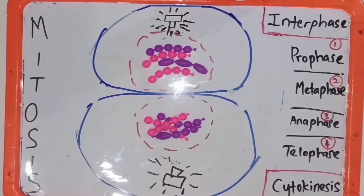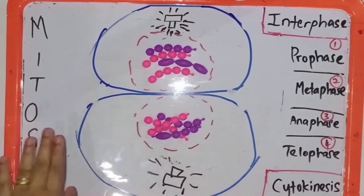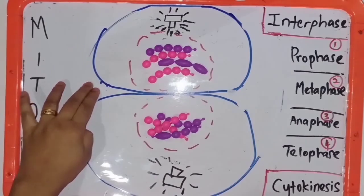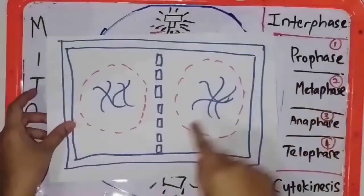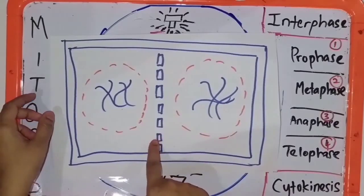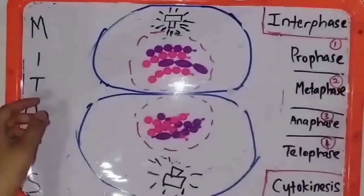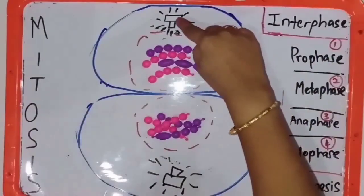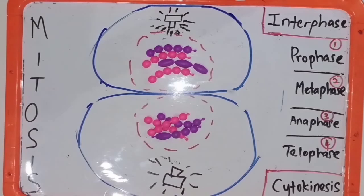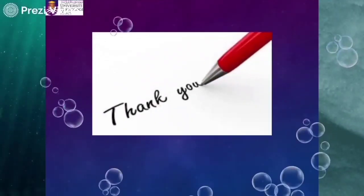The differences between mitosis in animal cells and plant cells: in animal cells, a cleavage furrow forms during cytokinesis, but in plant cells, a cell plate forms during cytokinesis. Another difference is that animal cells have asters and centrioles, but plant cells do not have asters and centrioles. Mitosis takes place in meristematic cells in plants; for animals, mitosis takes place in somatic cells. Thank you and see you soon!